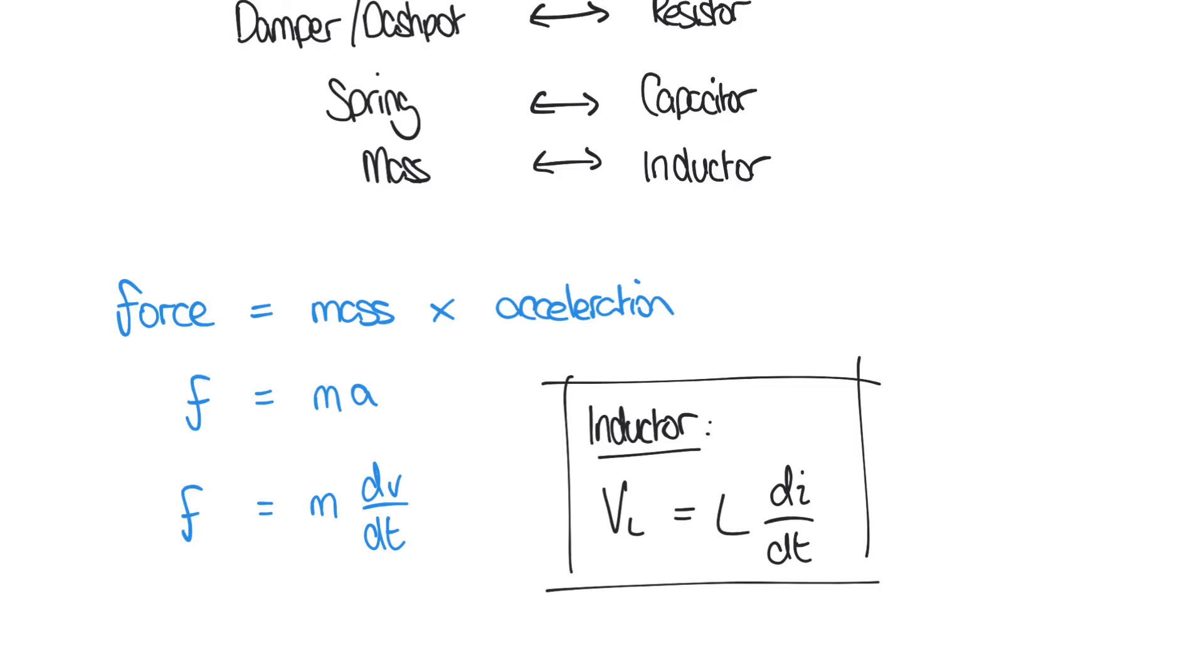So we've already established earlier that voltage is analogous to force, which again we see here. We've also seen that current is analogous to velocity, which again we see here. So that leaves us with mass m, which you can hopefully now see is analogous to inductance L.